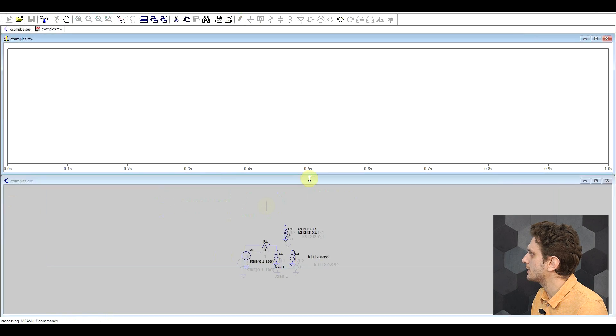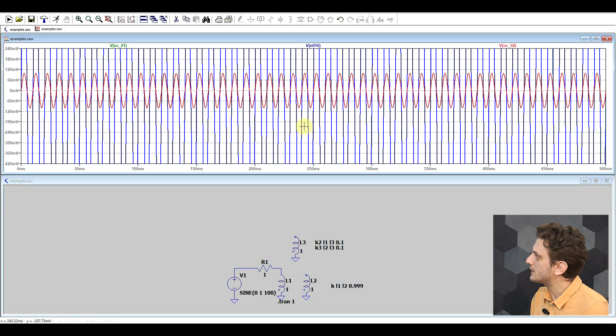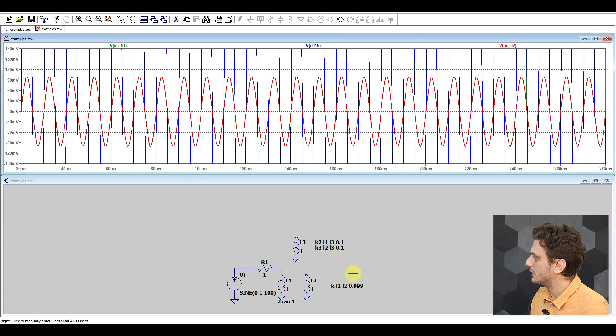So if we run this circuit we can see that we have the exact same signal on inductor 1 and inductor 2 because of the strong coupling. But if we now look at inductor 3 we can see that a very weak signal gets transferred to this one because of the very small coupling.